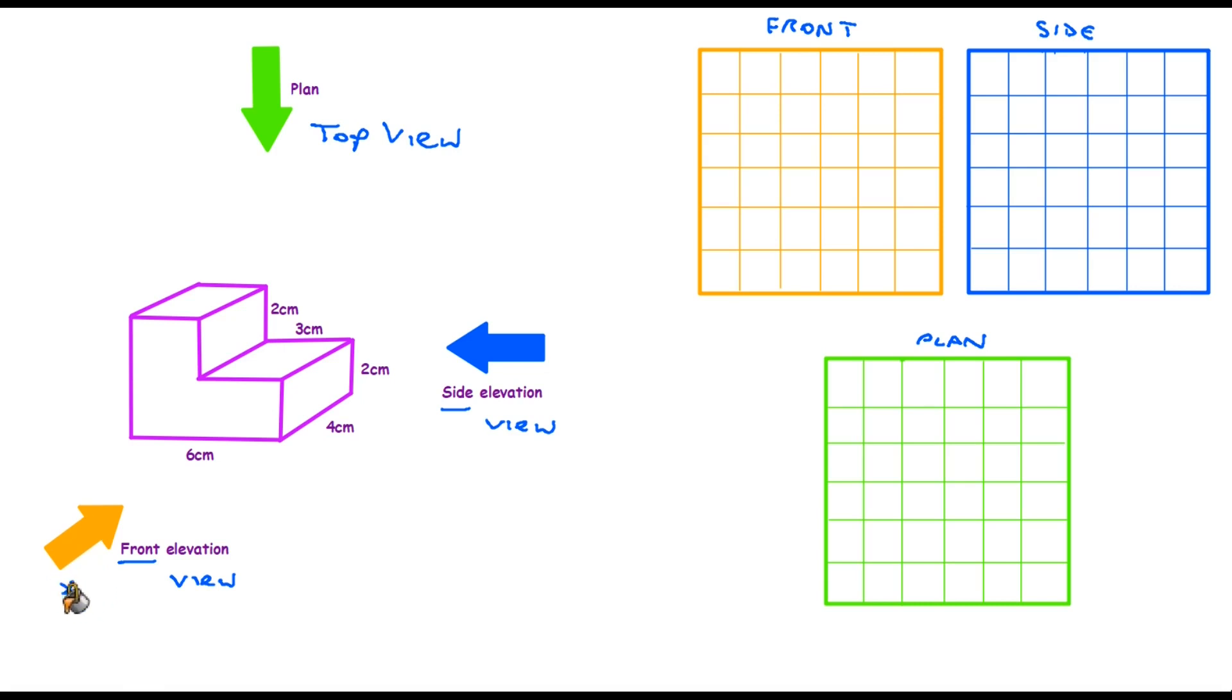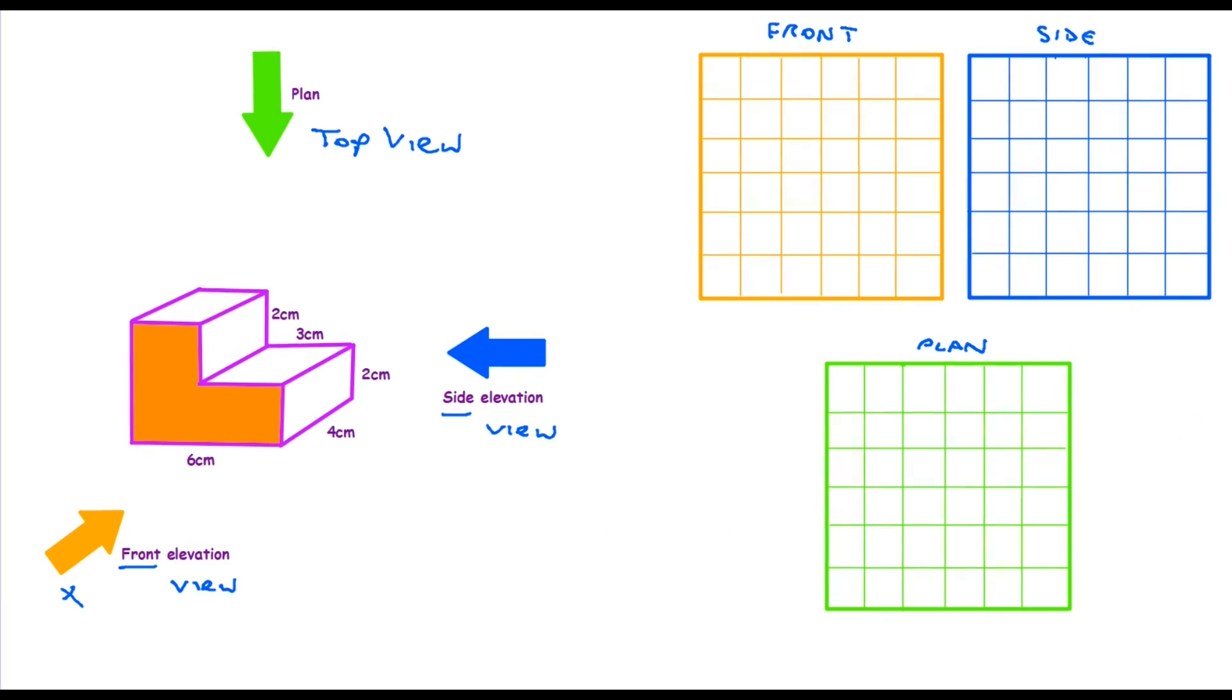If we are going to stand ourselves here where the orange arrow is and look at this shape, the only thing that we are going to be able to see is this side here. What we need to do then is recreate this shape accurately on the graph paper here. So the measurements matter to us.